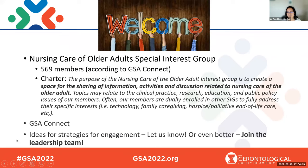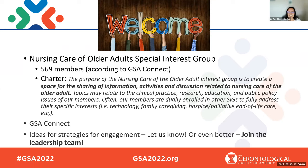This is being held by the Nursing Care of Older Adults Special Interest Group in collaboration with GSA. According to GSA Connect, we are a super strong group — we have 569 members, checked a few days ago so maybe we have more. We are a space for sharing of information, activities, and discussion related to nursing care of the older adult. If you ever visit our GSA Connect area, you can find information about the charter there. Please share any questions or comments on GSA Connect.